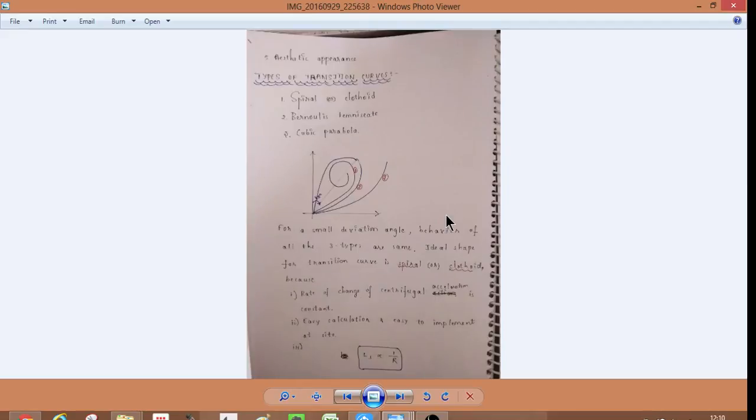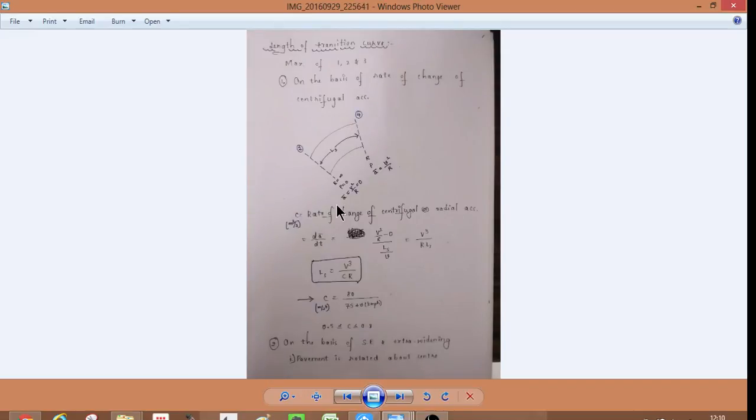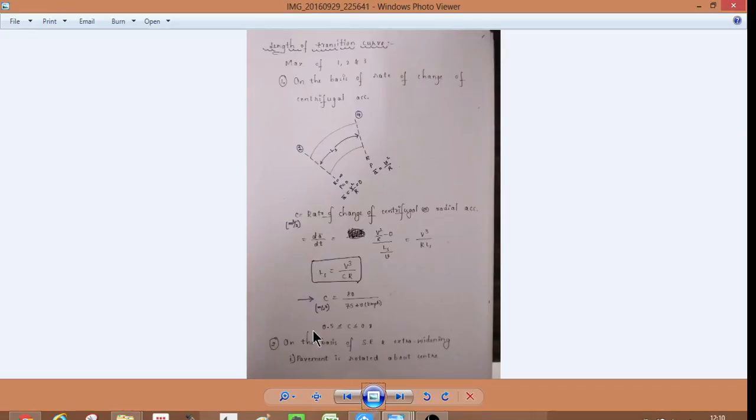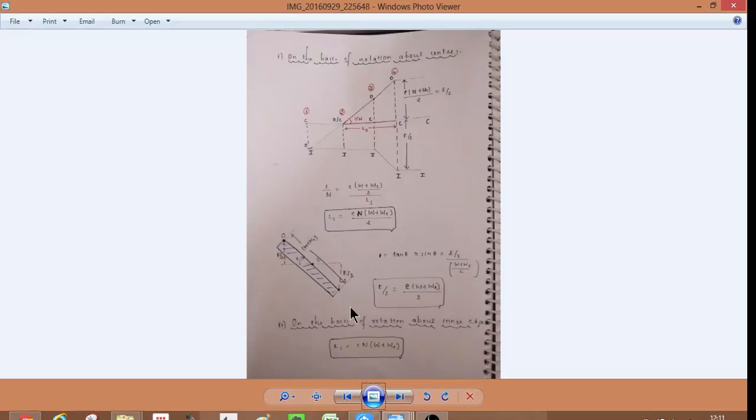And then you have transition curves. Spiral, clothoid, Bernoulli's lemniscate, cubic parabola. So, these are, we have mnemonics for them. See here. L is V cube by CR. This is length of transition curve on the basis of rate of change in centrifugal acceleration. L is equal to V cube by CR. C is equal to 80 by 75 plus V in KMH. On the basis of super elevation and extra widening, pavement is rotated about center.